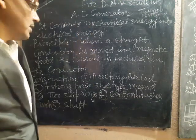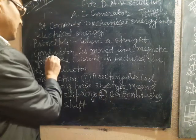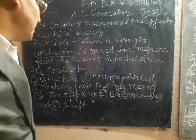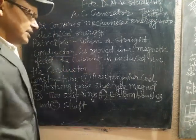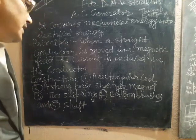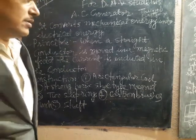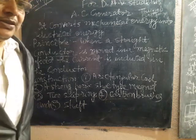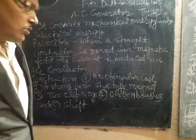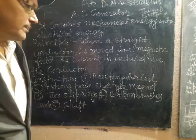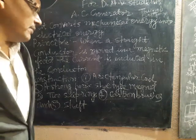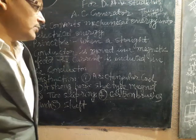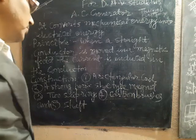Principle: when a straight conductor — a conductor through which current will pass — is moved in a magnetic field, current is induced in the conductor. So when a rectangular coil is moving in a magnetic field, induced current is produced.